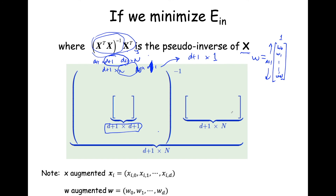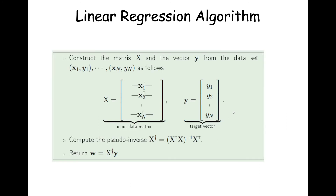This is our linear regression algorithm: take your data set, construct your design matrix and target vector, compute the pseudo-inverse — that's (X^T X)^{-1} X^T — and multiply by y. That gives you your w vector. We'll try an exercise on this.